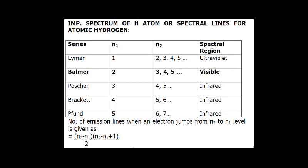For the Paschen series, n1 is three and the electron can come from orbit four, five, six, and so on. For the Brackett series, n1 is four and n2 is five, six, and so on. For the Pfund series, n1 is five and n2 is six, seven, and so on. The regions are: Lyman series falls in the ultraviolet region, Balmer series in the visible region, and Paschen, Brackett, and Pfund series all fall in the infrared region.